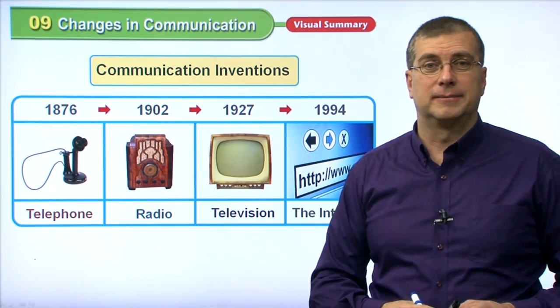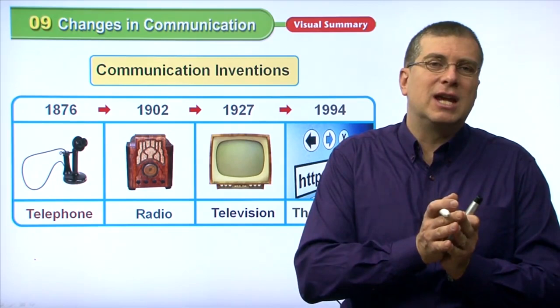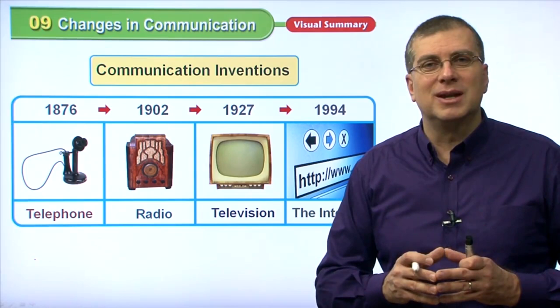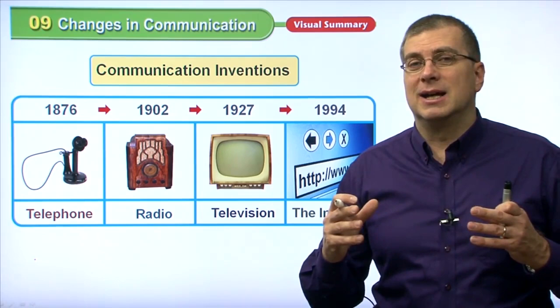That wraps it up for today. We've talked about unit nine — changes in communication — and how the method of communication has changed from the past to now. Especially important are the inventions used to help people communicate. It's really amazing that we're living in this time because we have so many inventions around us that make our life easier and more fun. You're living at a very lucky time in history. We'll see you guys next time. Take care, everybody.